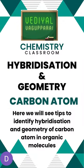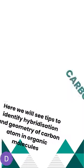Carbon atom — it's a unique atom. It has three types of hybridizations and the geometries are different. Here we will see some tips to identify the hybridization and geometry of a carbon atom in organic molecules.